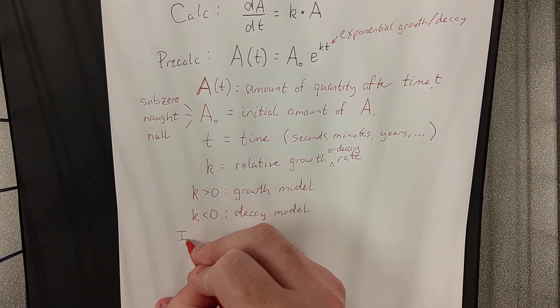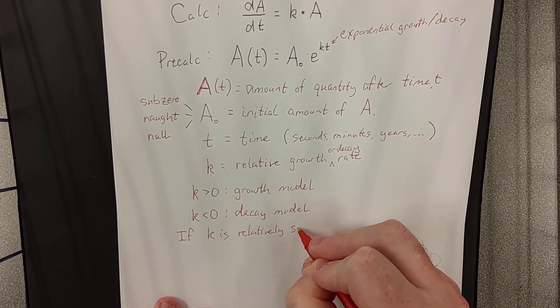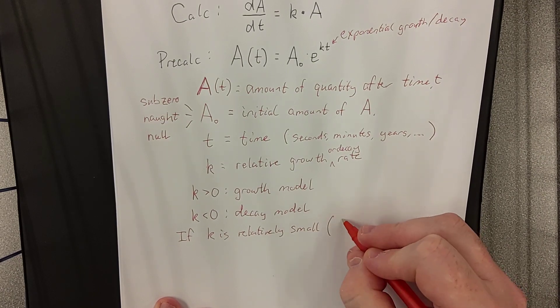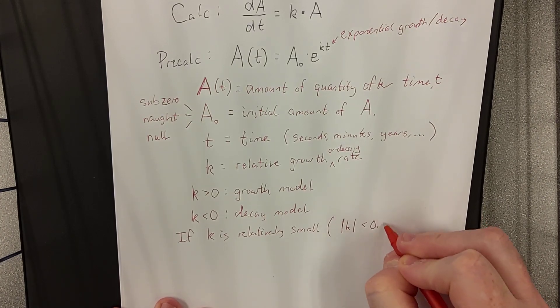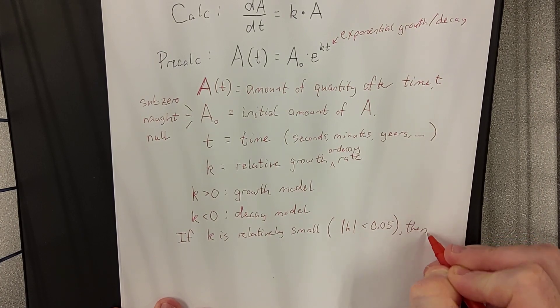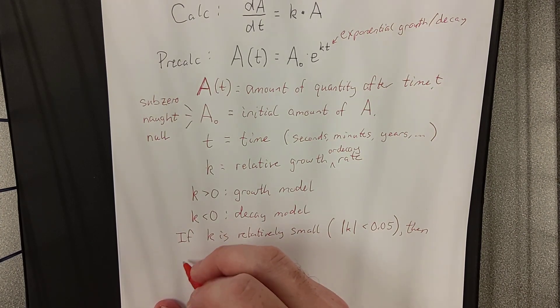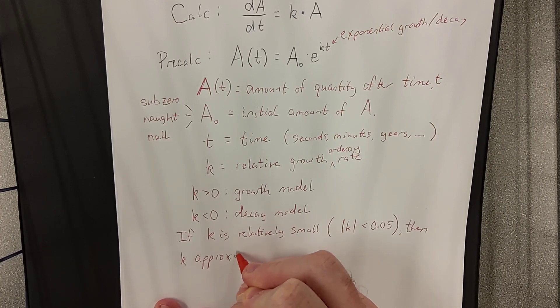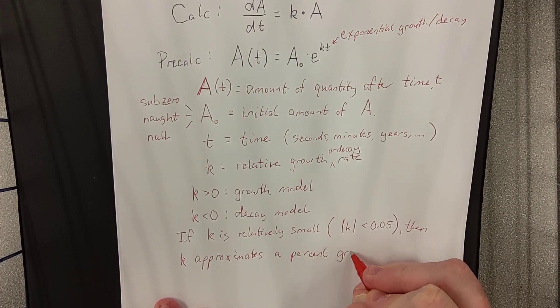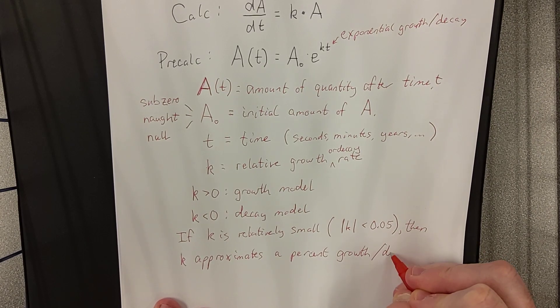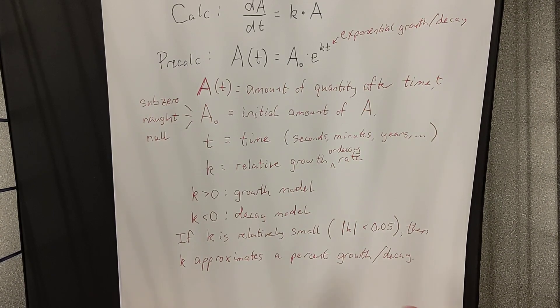The other thing that we can say is that if k is relatively small, I would say as long as k is somewhere between negative 0.5 and 0.5. So, again, negative for a decay model and positive for a growth model. As long as it's relatively small, then k approximates a percent growth or decay rate. We'll get into an example of that in the next video. I just wanted to make sure that everything got defined here.